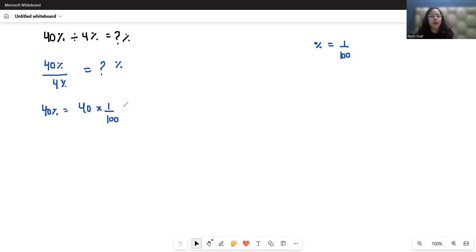So this becomes 40 by 100, that is 0.4. Similarly, 4% equals 4 multiply 1 by 100, that is 4 by 100 or 0.04.